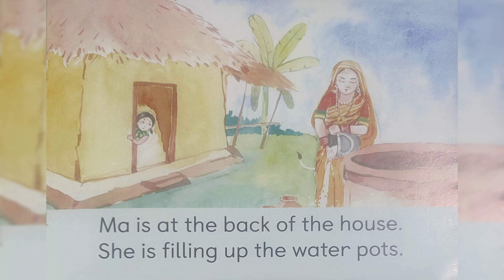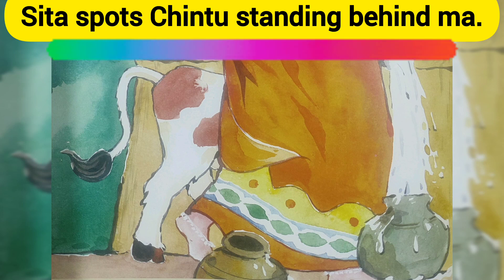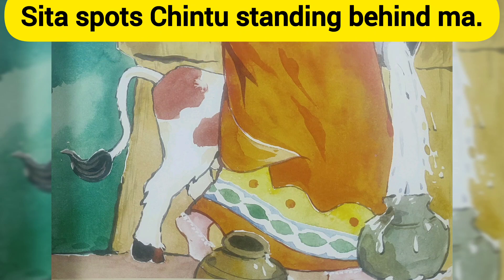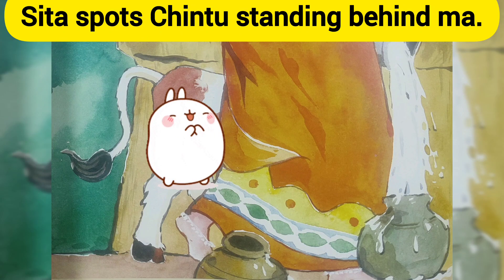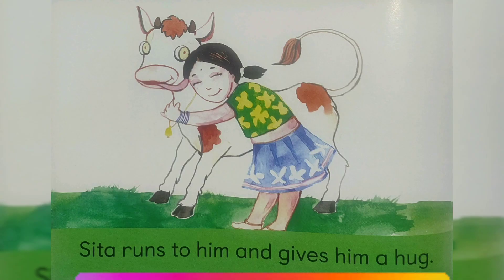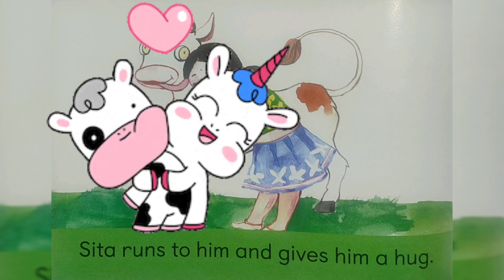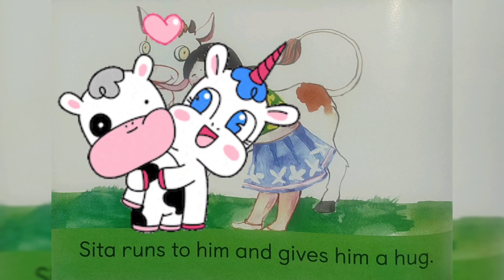She is filling up the water pots. Vahe paani ke bartan bhar rahi hai. Sita spots Chintu standing behind maa. Sita ne Chintu ko maa ke pichhe khada hua dekha. Behind matlab pichhe. Sita runs to him and gives him a hug. Sita Chintu ke paas daudkar jati hai aur Chintu ko gale laga leti hai.